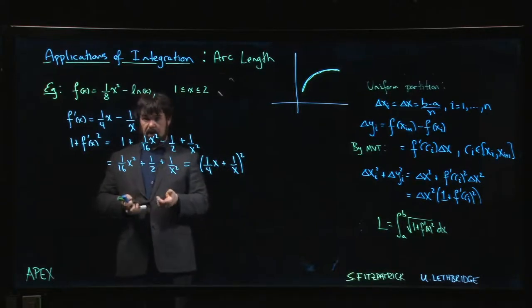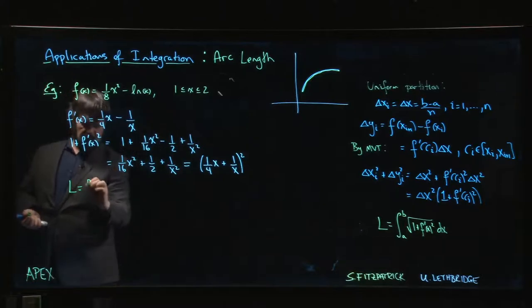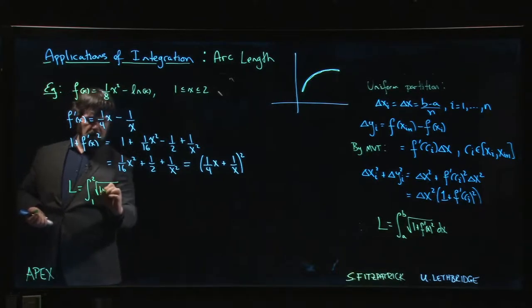Well now we can do the integral. So the arc length for this particular curve is going to be the integral from 1 to 2 of the square root of 1 + f'(x)^2 dx.